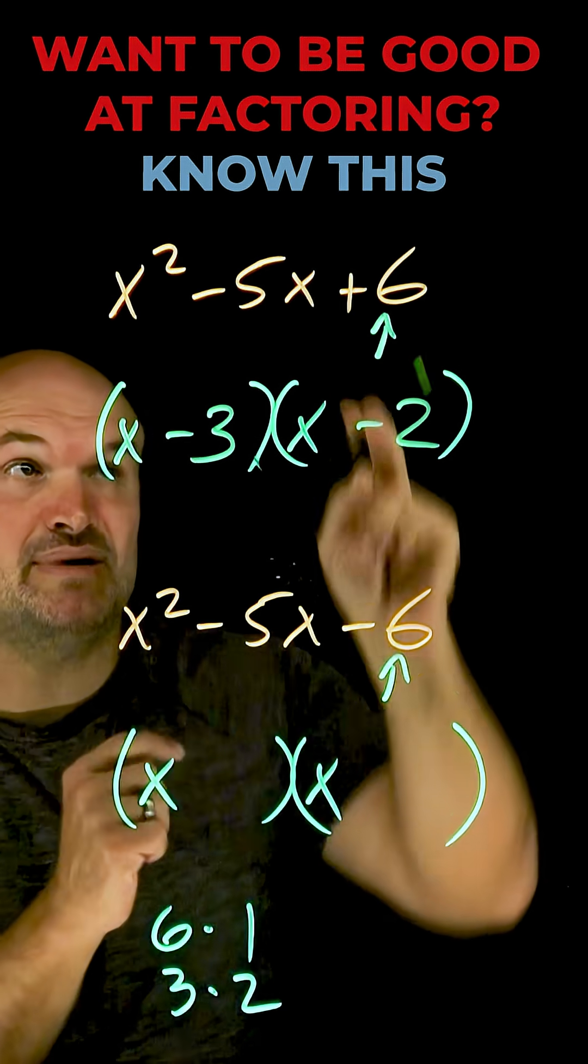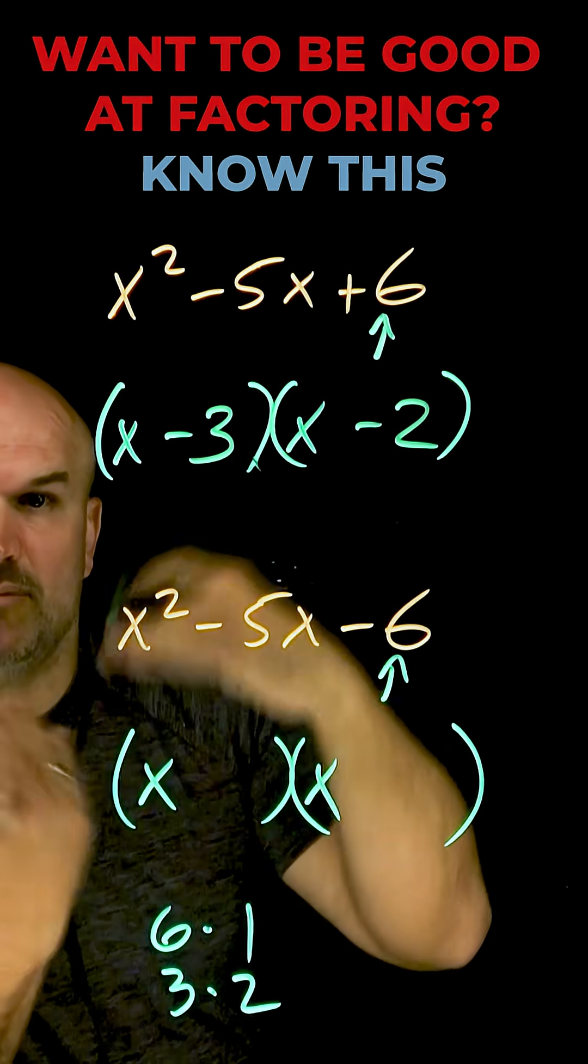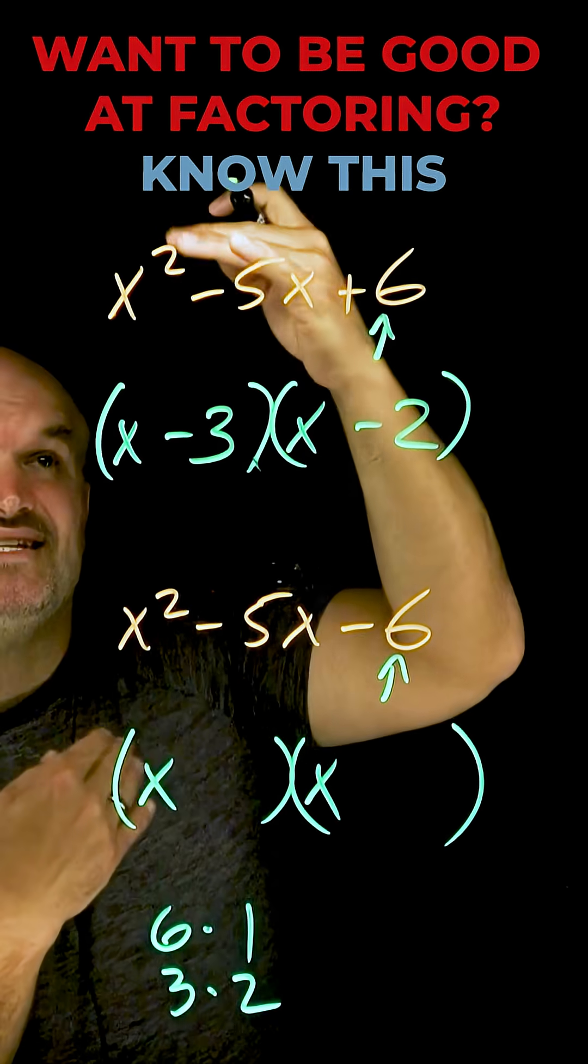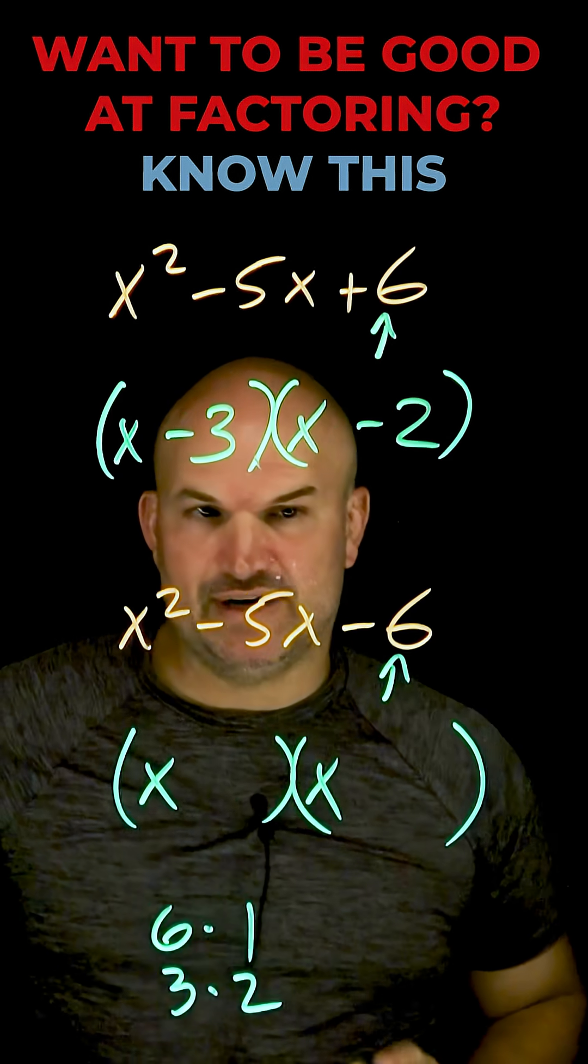Again, this works because when your last number is a sum, your two signs are either going to be both positive or both negative. But since the sum is adding to give me a negative five, I know it has to be a negative three and a negative two. Now, let's go and look over here.